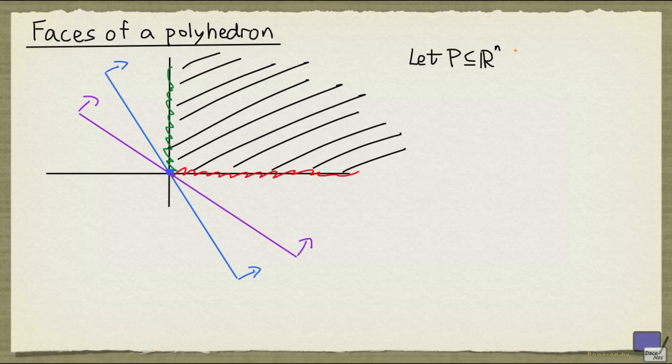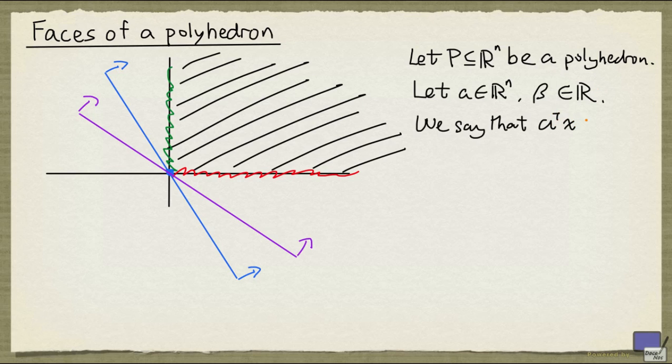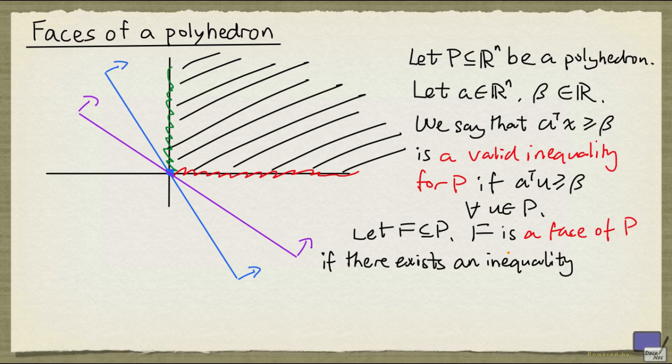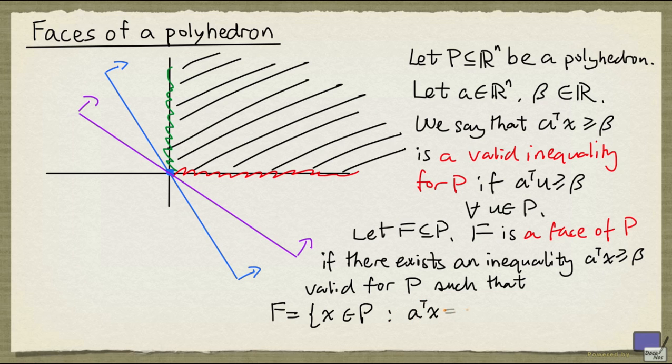So let P be a polyhedron in R^n, and let A be an n-tuple, beta a real number. We say that the inequality A transpose X greater than or equal to beta is a valid inequality for P if A transpose U is at least beta for all U in P. Now consider a subset F of P. We say that F is a face of P if there exists an inequality AX greater than or equal to beta, valid for P such that F is precisely the set of X in P such that A transpose X equals beta.